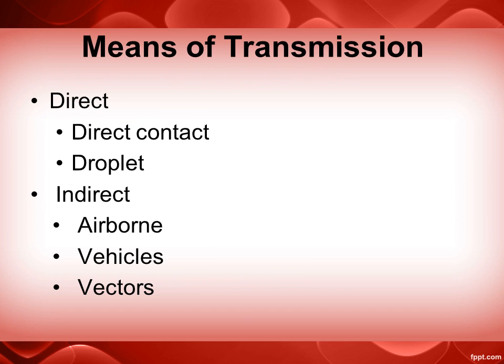Means of transmission can either be direct or indirect. Direct includes direct contact like skin-to-skin contact, kissing, and sexual intercourse. Direct contact also includes droplets spread through the air through sneezing, coughing, and even talking.